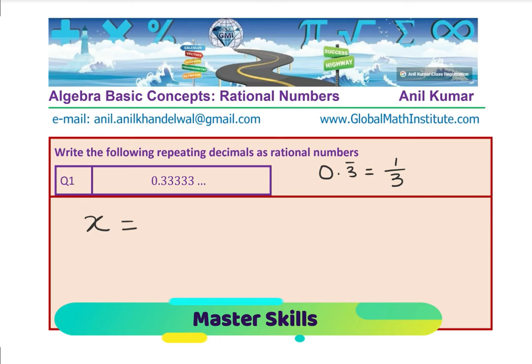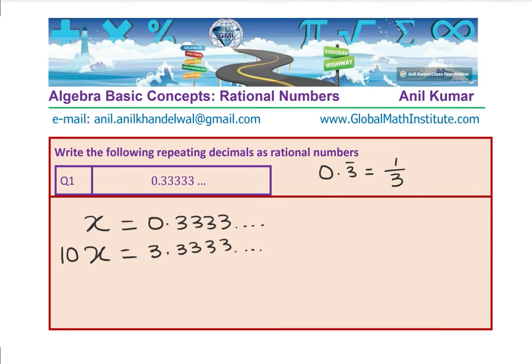We do not know what rational number represents 0.3333 repeating. So let that number be x. We will say: let x equal 0.3333 repeating. In that case, what will be the value of 10 times x? If I multiply this by 10, the decimal moves and I get 3.3333 repeating. There are infinite 3's, so we can just keep adding them.